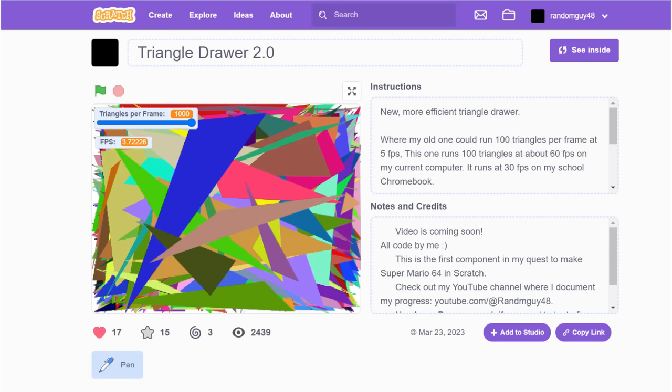If you want to check out my Scratch project, I'll leave a link to it in the description. So that's how I made a triangle. There you go. That's all I've got for you today.